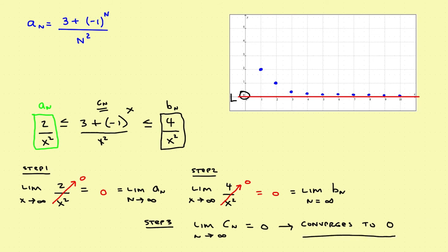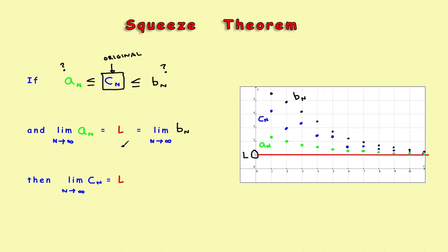One last recap: given the original sequence, find a lower bounding sequence and an upper bounding sequence that your sequence stays between. Find the limit of the lower sequence and the limit of the upper sequence. If those two limits are the same value L — if a_n approaches L and b_n approaches L — then your sequence also has to approach L. This is called the squeeze theorem, sometimes the sandwich theorem, similar to what you did when you first worked with limits.